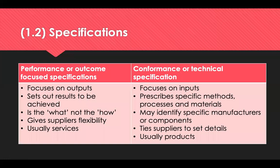Specifications are an integral part of procurement — often referred to as the heart of a contract. There are two types of specifications: performance, also known as outcome focused, and conformance, known as technical specifications. Performance specifications outline what a product or service is to do or achieve, which allows for innovation. Providers can choose how to make it work rather than following a specific process. It allows for various options of a requirement to be considered, promoting innovation and competition in the marketplace.